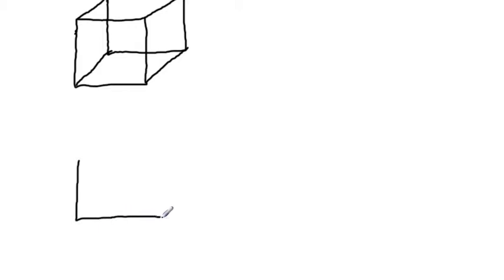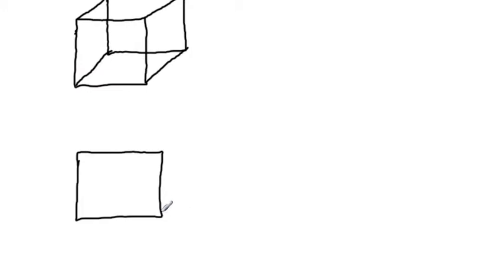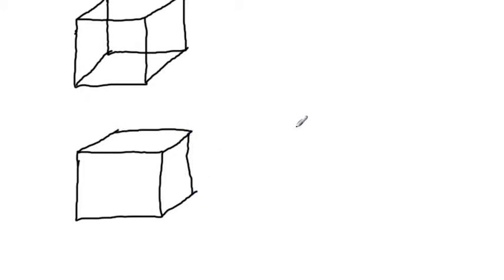The second way is to make a square, then off each of three corners draw a line. It's really important that each line is at the same angle. I'll show you an example where the lines are the same angle, and then one where they're at different angles so you can see the difference. Keeping the same angle here, and here, and then connecting them — and there's a pretty good cube.